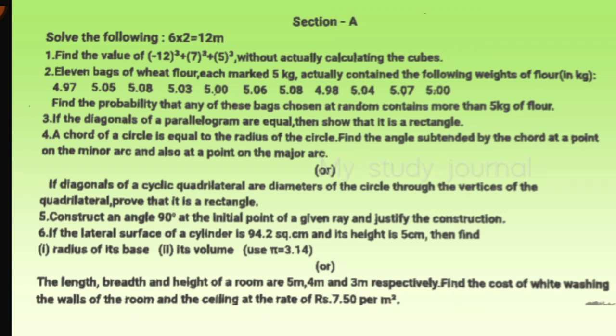This is a quadrilateral question and it's very easy. Fourth one: a chord of a circle is equal to the radius of the circle. Find the angle subtended by the chord at a point on the minor arc and also at a point on the major arc. We can find this using the theorem.